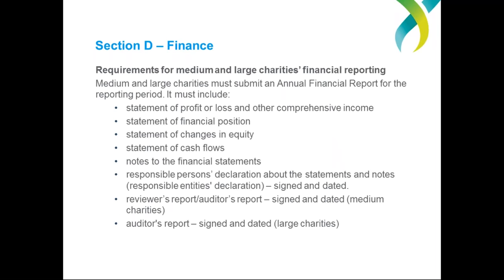Different sized charities have different reporting requirements. One thing that medium and large charities need to do, which small charities don't, is to submit an annual financial report alongside their annual information statement. Submitting an annual financial report is mandatory for medium and large charities, but optional for small ones. Note that medium-sized charities have the option of submitting a reviewer's report or an auditor's report, while large charities must submit an auditor's report.